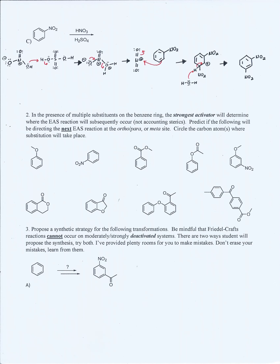For Part II, in the presence of multiple substituents on the benzene ring, the strongest activator will determine where the EAS reaction will occur next. Predict if the following will be directing the next EAS reaction at the ortho-para or meta position, and circle the carbon atoms where the substitutions will take place. For the first one, there is a moderate activator attached on the benzene ring, which means that this is an ortho-para directing with preference to the para position. So we will circle the para position of the activator.